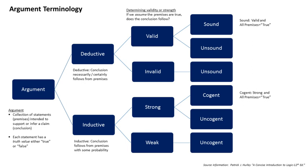Non-deductive logic is reasoning using arguments in which the premises support the conclusion but do not entail it. Forms of non-deductive logic include the statistical syllogism, which argues from generalizations true for the most part, and induction, a form of reasoning that makes generalizations based on individual instances. An inductive argument is said to be cogent if and only if the truth of the argument's premises would render the truth of the conclusion probable (i.e., the argument is strong) and the argument's premises are in fact true. Cogency can be considered inductive logic's analog to deductive logic's soundness. Despite its name, mathematical induction is not a form of inductive reasoning. The lack of deductive validity is known as the problem of induction.